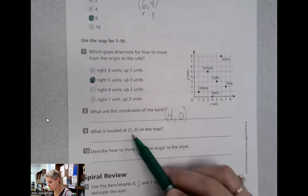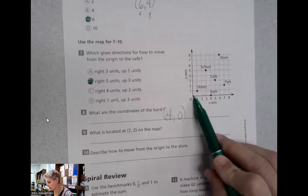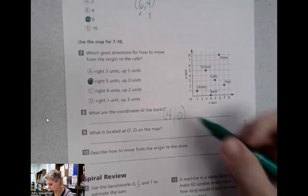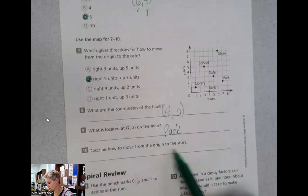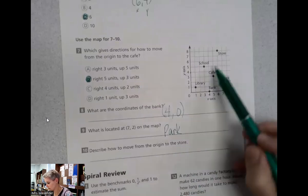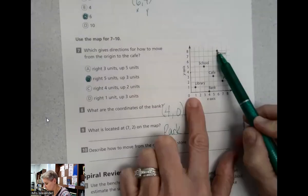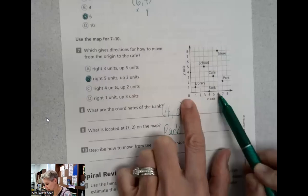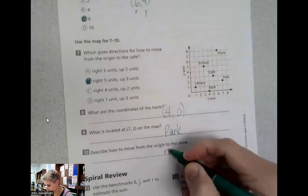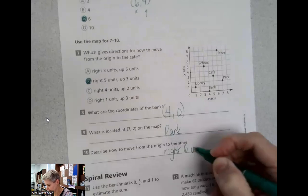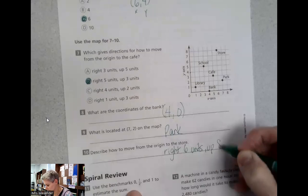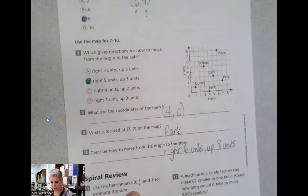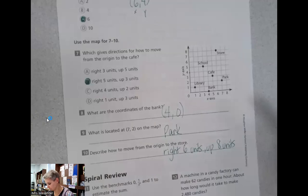What is located at the coordinate (7,2) on the map? (7,2) is the park. Describe how to move from the origin to the store. Here's the store. So from origin, I'm going to go right six units and up eight units. Right six units and up eight units. That's it for this lesson for today.